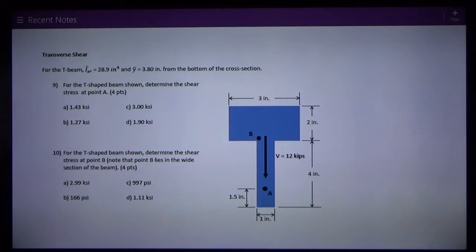Well, there's one equation given to us: tau average equals V over A. That was early on, and this question does not ask for average shear stress.